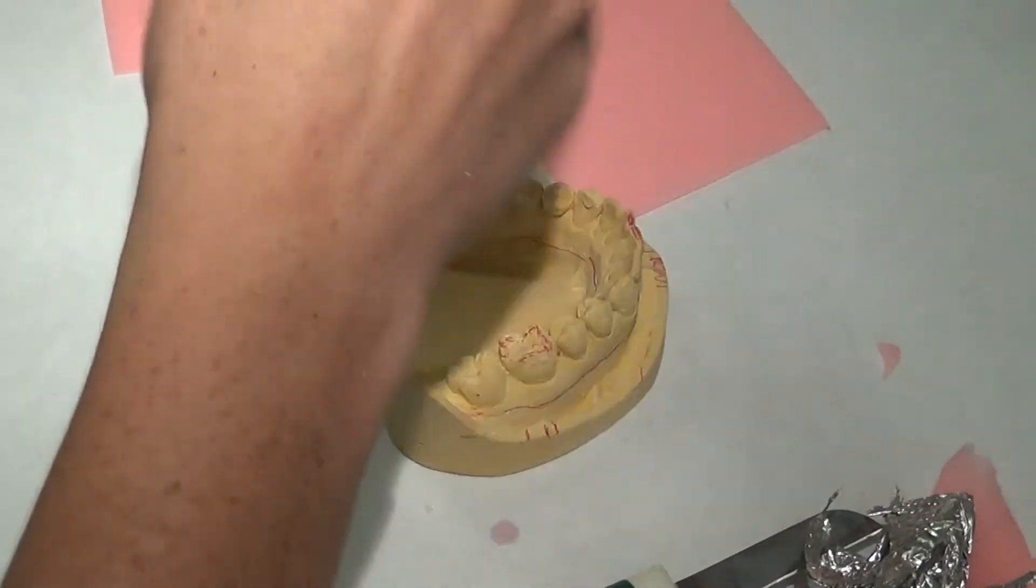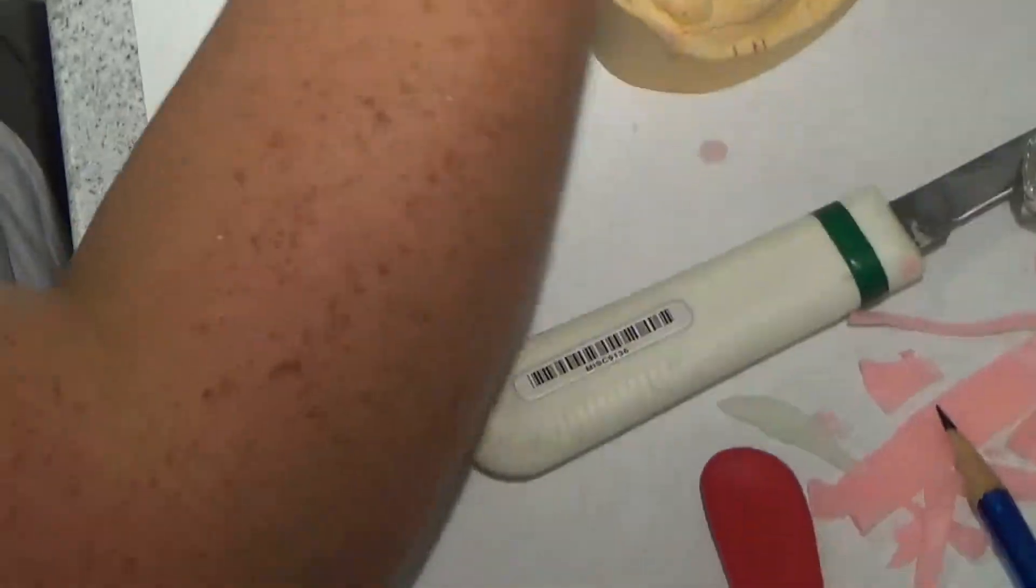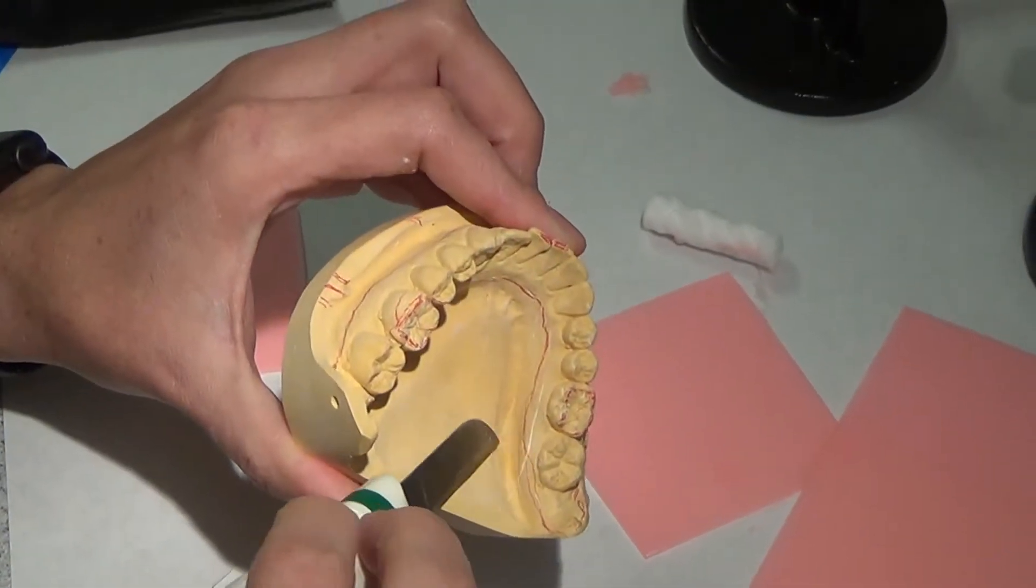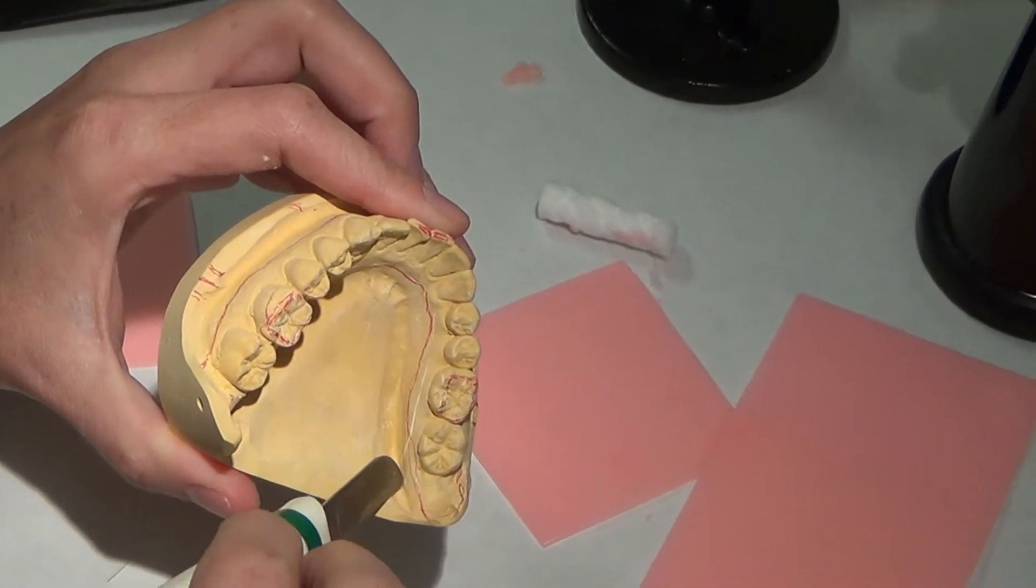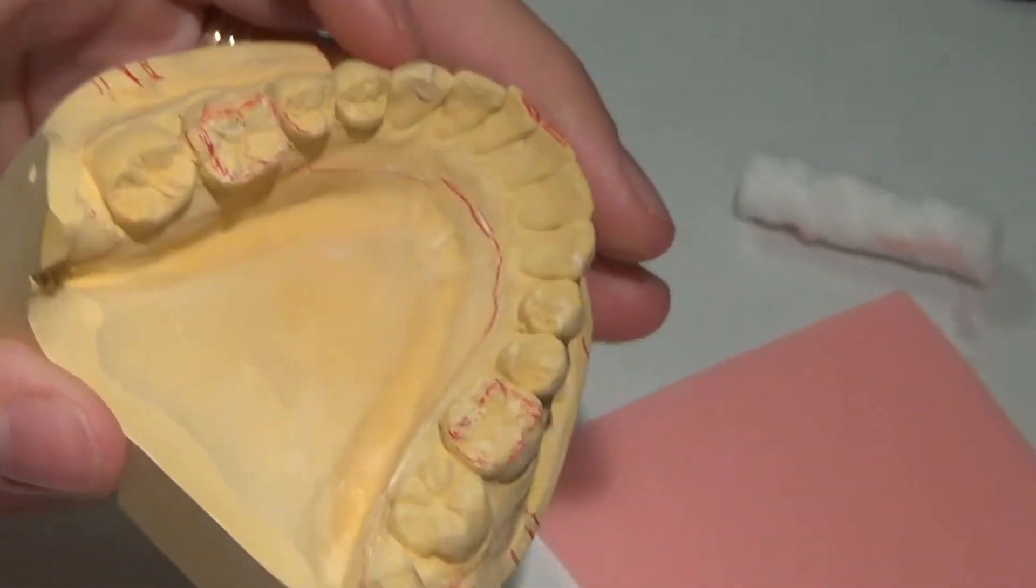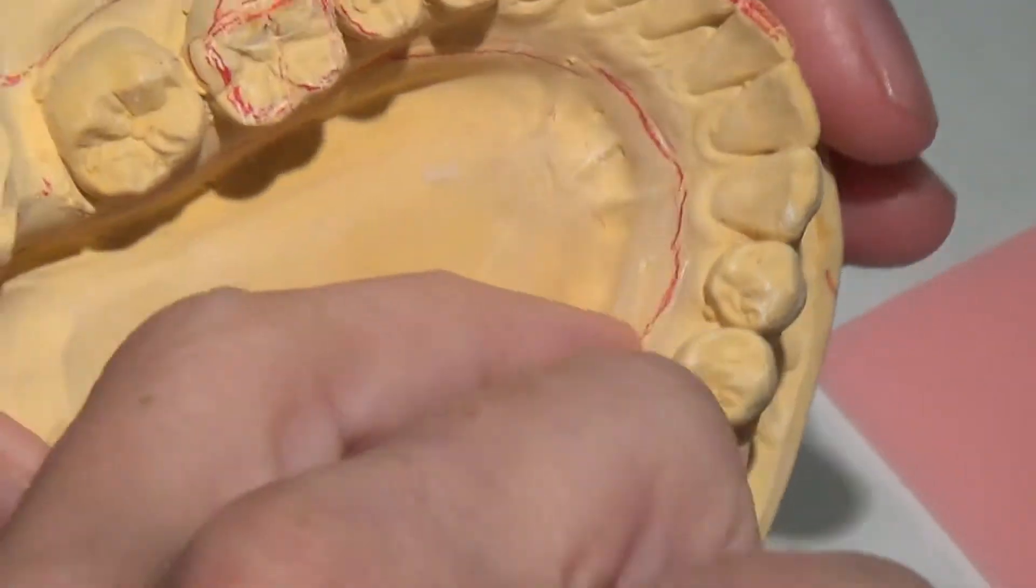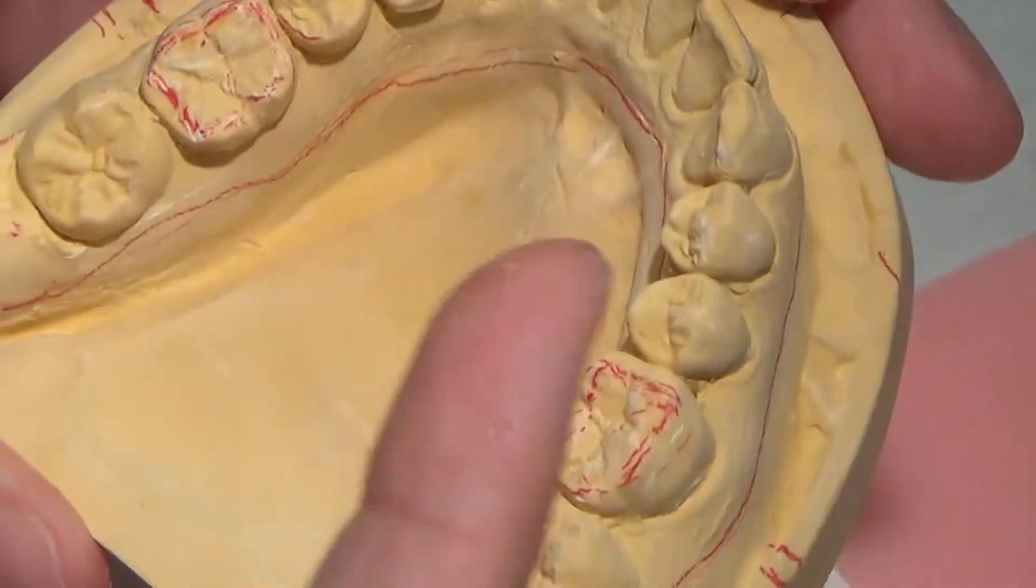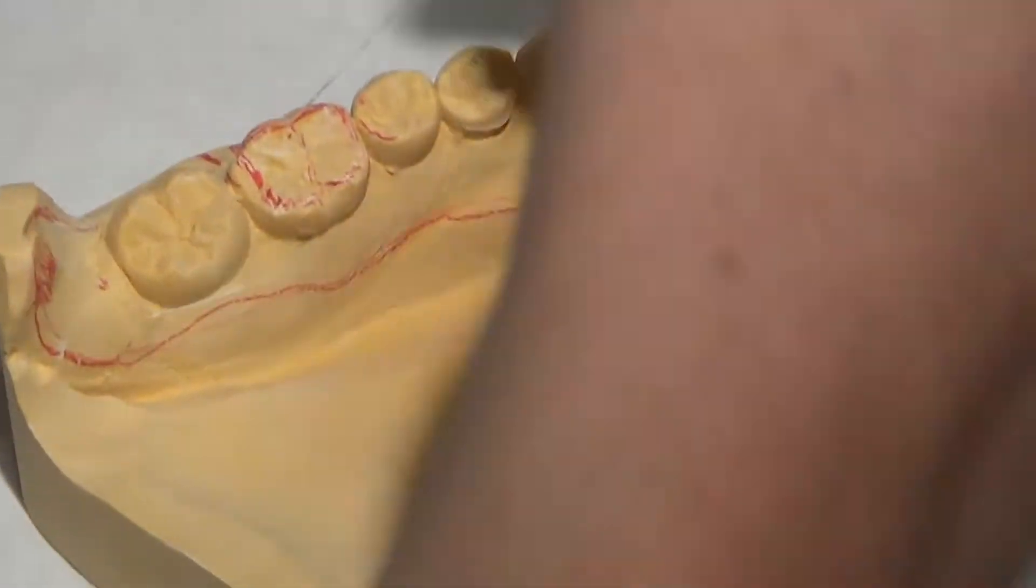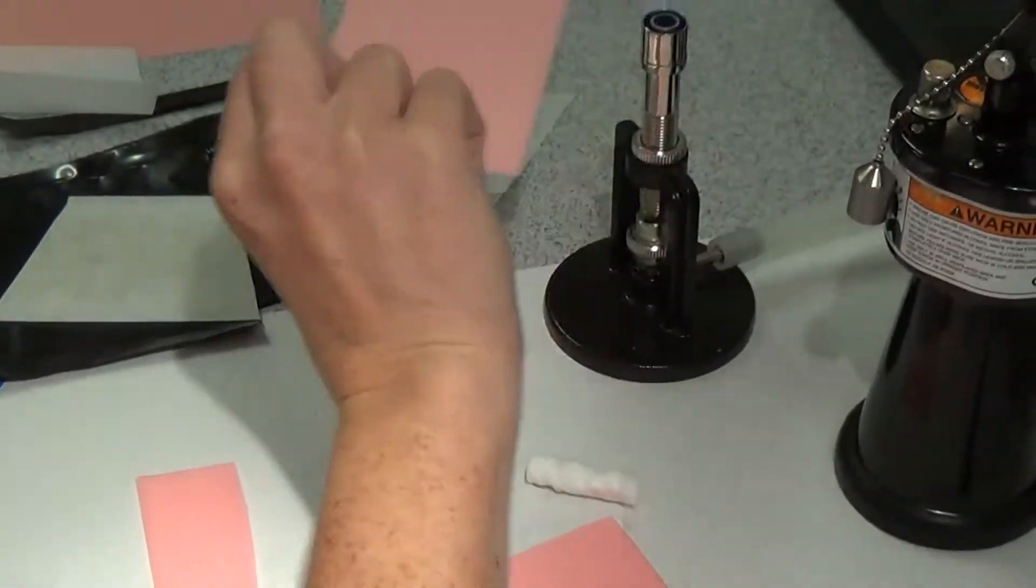Okay, so on the mandible you're going to have the same thing. If you've got undercuts back here, a lot of you guys have undercuts in the retromylohyoid area, so you want to block those out first. If you have tori, especially large ones—I saw someone in this lab had a large one—you want to tuck that wax up underneath there. I don't really have that issue here, so we can help you.